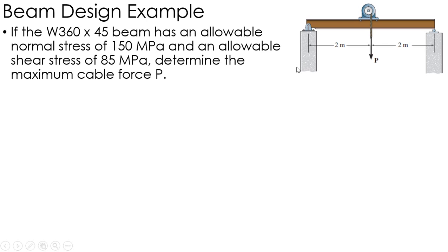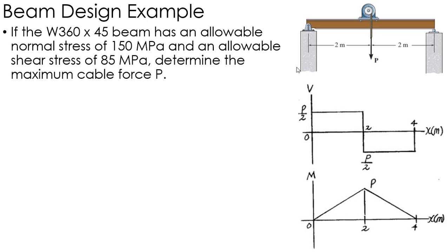The first thing I'm going to do is figure out the maximum moment and maximum shear by drawing my shear and bending moment diagrams, which are pretty simple here. I have P over 2 and negative P over 2 for my shear, and then my moment starts at 0, raises up to P, and then back down to 0. So my maximum moment is P, my maximum shear is P over 2.